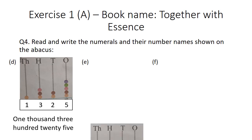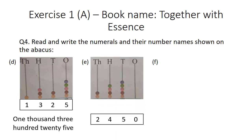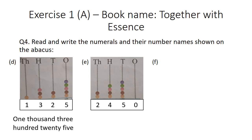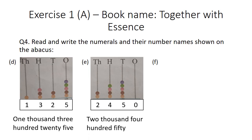Part E: at the ones place there is no bead. At the tens place there are 5 beads. At the hundreds place there are 4 beads. At the thousands place there are 2 beads. The number formed is 2450, and its number name is two thousand four hundred and fifty.